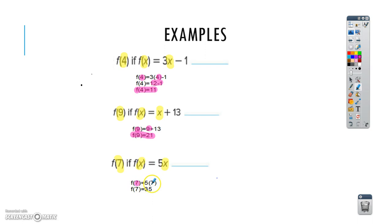And for the third one, you would plug in 7 for X on each one, and since 5 times 7 is 35, it would give you f(7) equals 35.